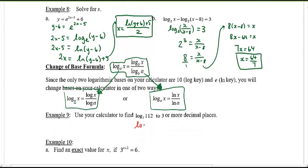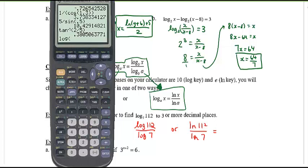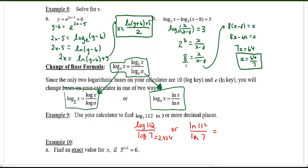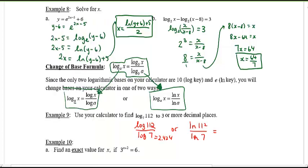For example, to find log base 7 of 112, compute log(112) / log(7), or equivalently ln(112) / ln(7). Let's verify both give the same answer. Computing log(112) / log(7) gives approximately 2.424, and ln(112) / ln(7) also gives approximately 2.424 — confirming it doesn't matter which base you use as long as it's consistent.